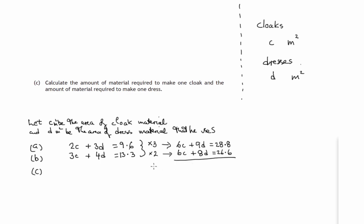We'll need to subtract. Why? That gets rid of our 6C. 6C taken away from 6C is 0. 8D taken away from 9D is 1D, don't need to write the 1. 26.6 away from 28.8 is 2.2.